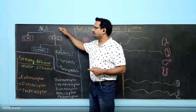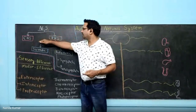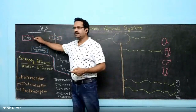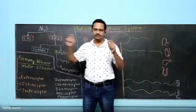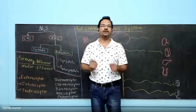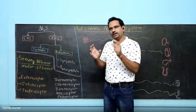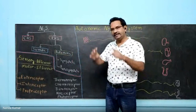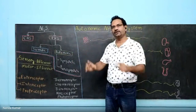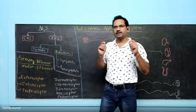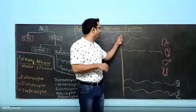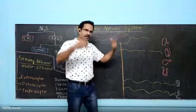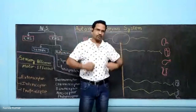The nervous system is divided into the central nervous system and the peripheral nervous system. The central nervous system is called 'central' because it is the central organ which controls and integrates the entire functions of the human body. It consists of the brain and spinal cord, which are central to our body.